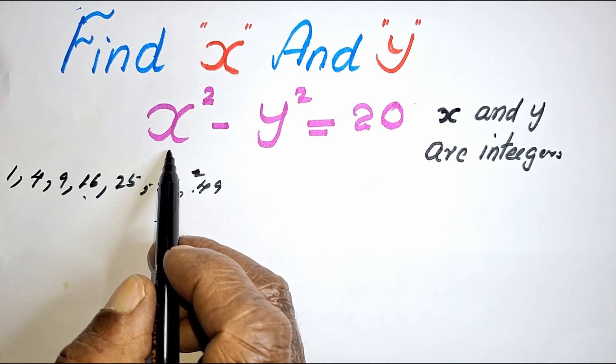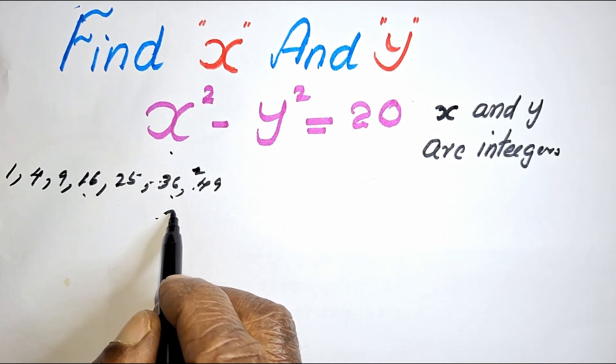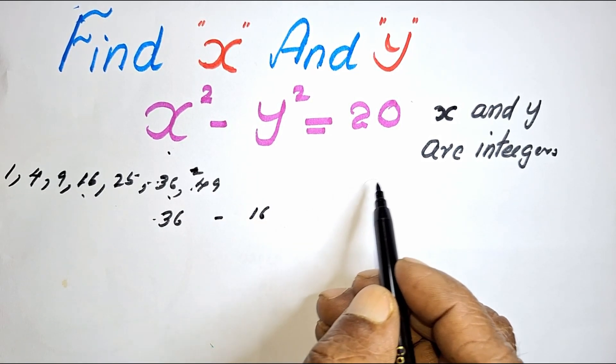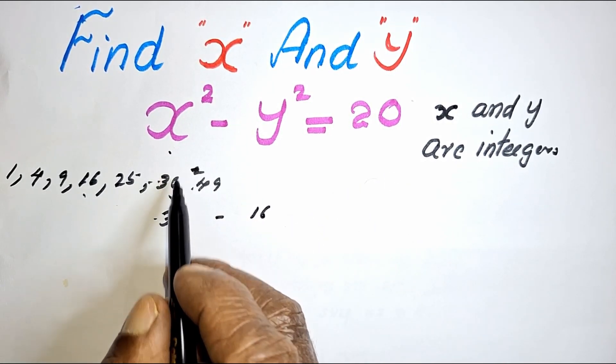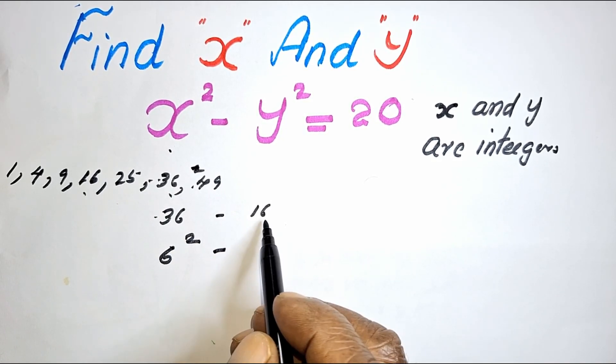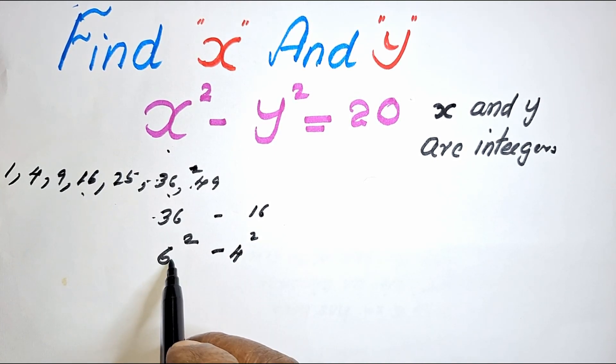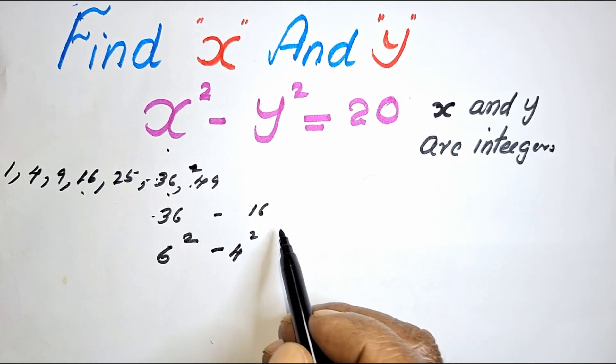That means here it should be 36, and this should be 16. 36 minus 16 is equal to 20. That means 36 means 6 squared, 16 means 4 squared. So 6 squared minus 4 squared, that means 20.